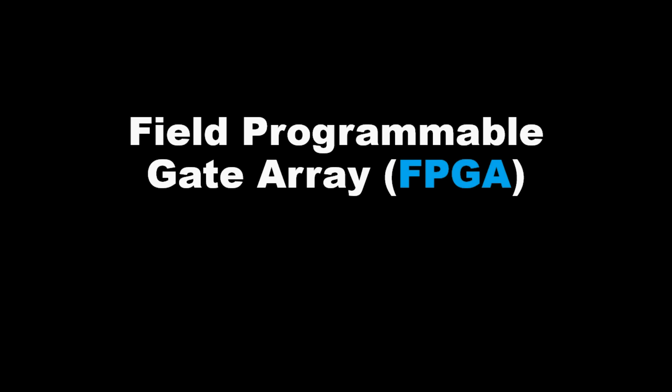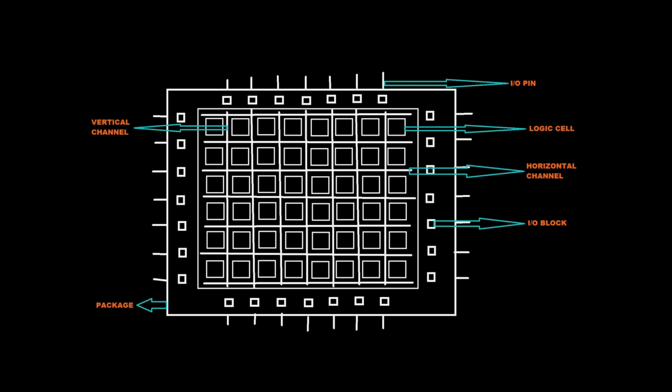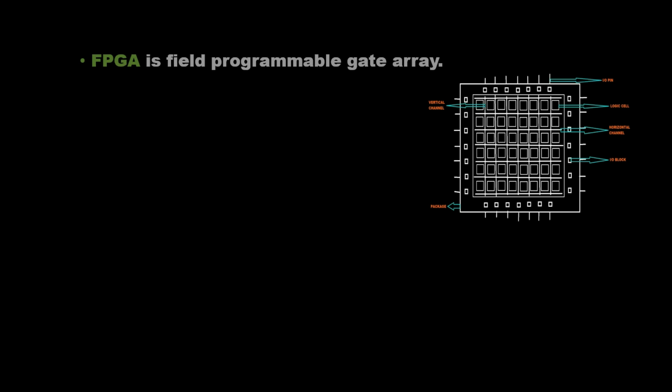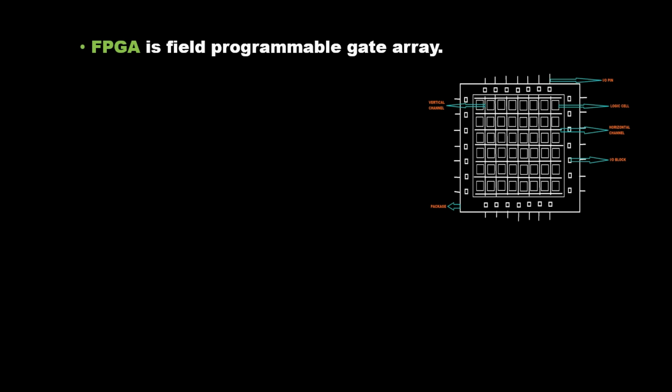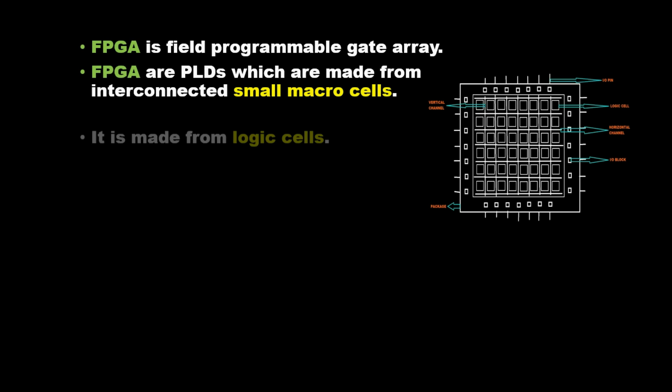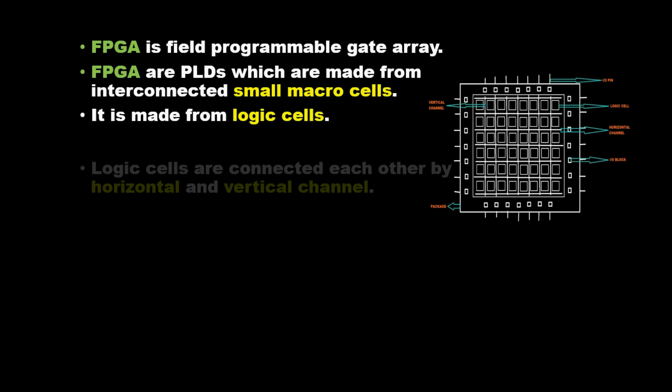Field Programmable Gate Array (FPGA) consists of I/O pins, logic cells, horizontal and vertical channels, I/O blocks, and package. FPGAs are PLDs which are made from interconnected small macro cells.